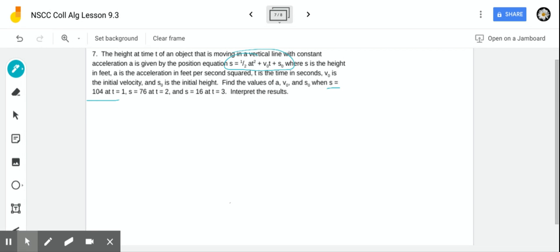First, we know that S equals 104 at time one. So we're going to plug that into this equation. S is 104 when T is one, so if you plug in one squared plus V sub zero times one plus S sub zero. That's our first equation. I might rewrite that so it's a little bit easier to read because we don't actually need those ones. So we have 104 equals one half A plus V O plus S O.